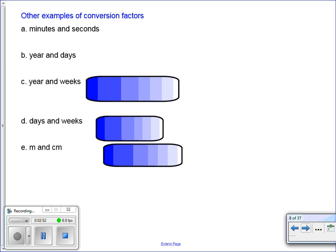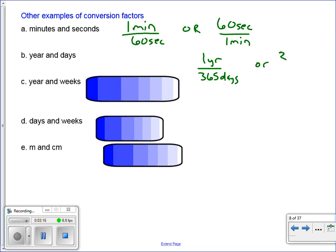So here are some other conversion factors. Minutes and seconds. You know that one minute is the same as 60 seconds. That would be a conversion factor. Or we could have written it as 60 seconds is equivalent to one minute. We would expect you to know that. Years and days. One year is 365 days. So we'll talk about leap year here. Or we could have written it as 365 days is one year. These are things that we would expect you to know, won't be given to you necessarily in a problem.